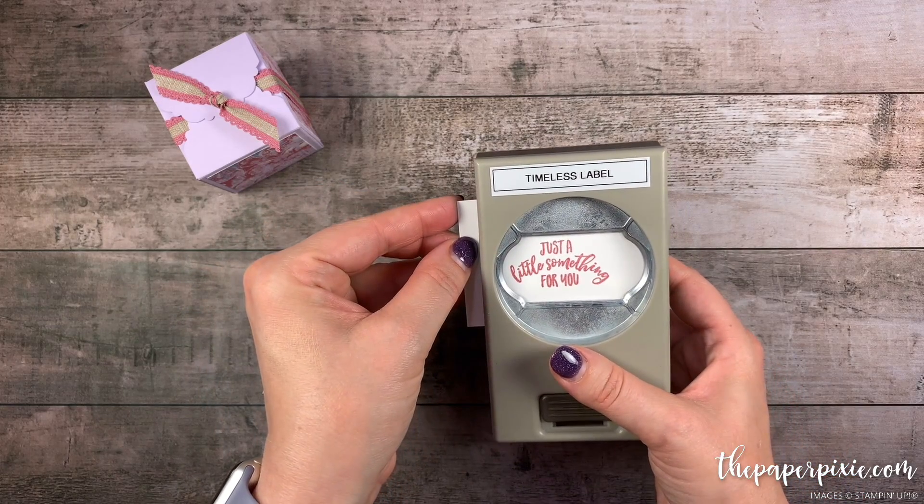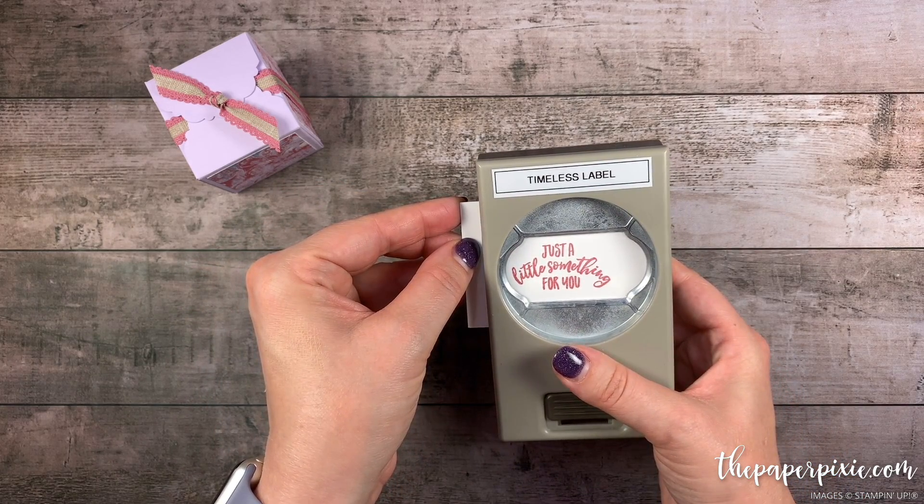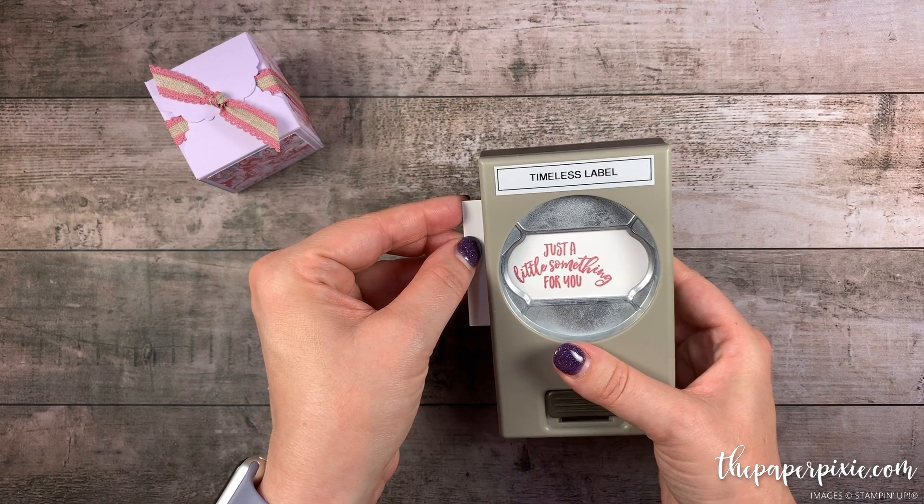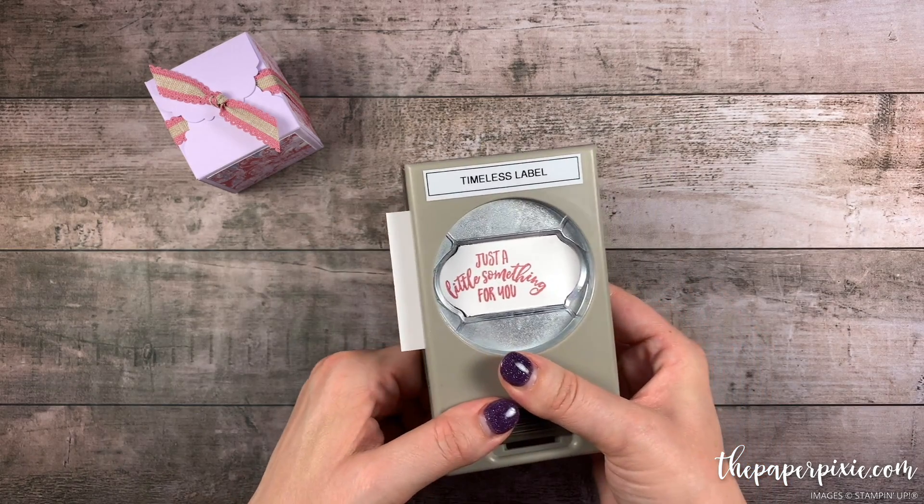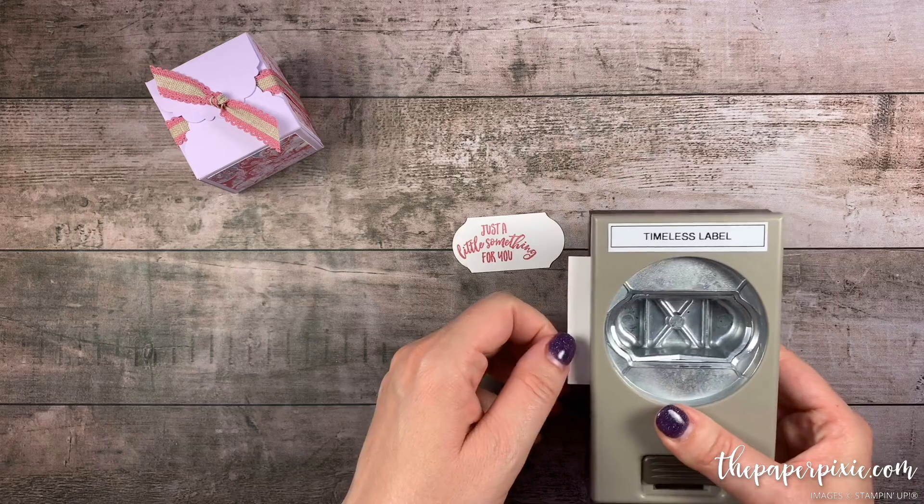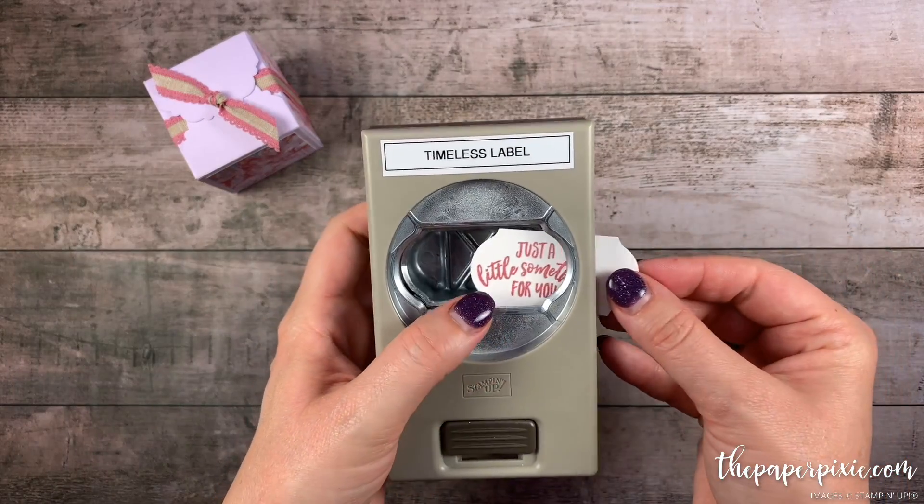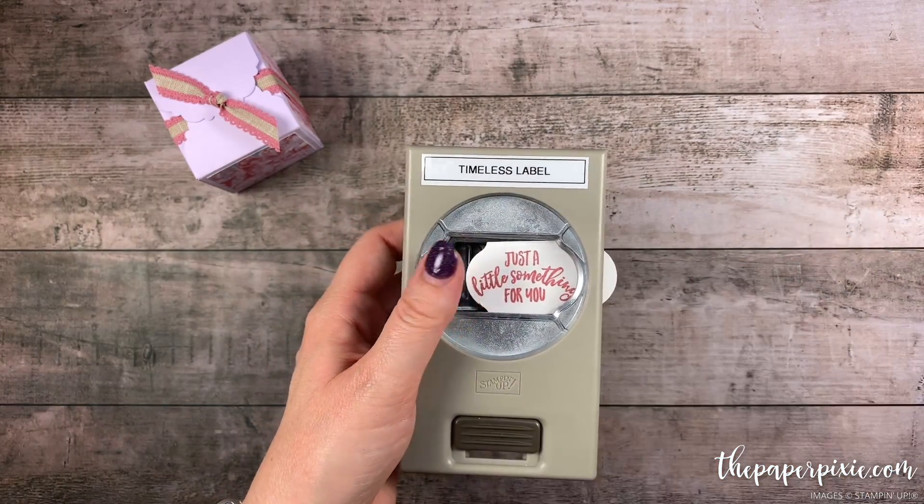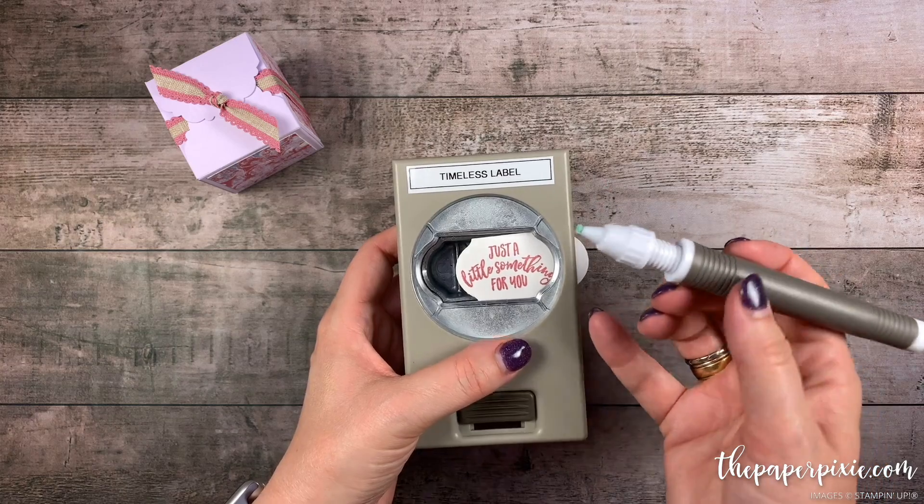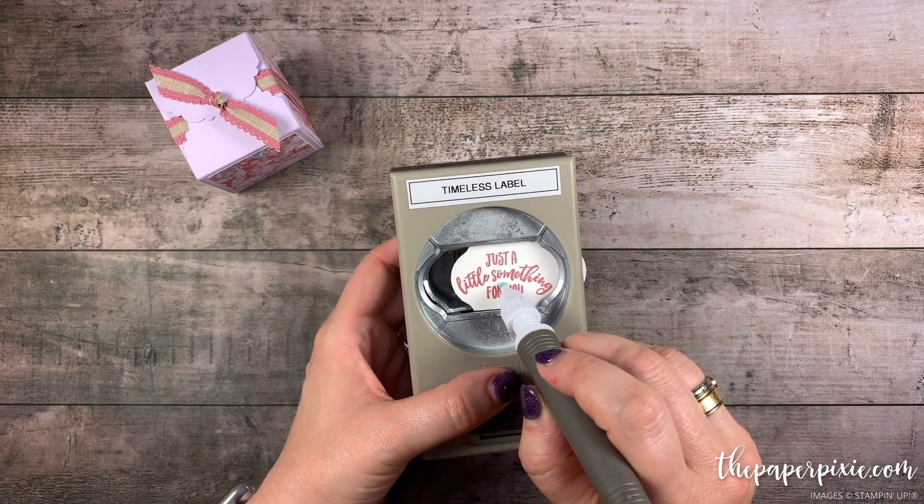And then we're going to punch that out with the Timeless Label Punch. I've got the sentiment off to the right. Because we're going to make this Timeless Label just a little bit smaller to fit the sentiment. So first punch it with the sentiment off to the left. Then I'm going to feed this back into the punch. And I'm going to use the putty end of the Take Your Pick tool to get this right where I want it.